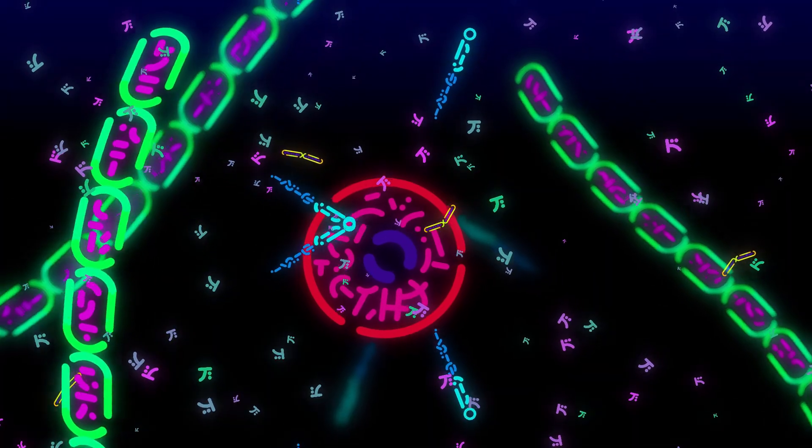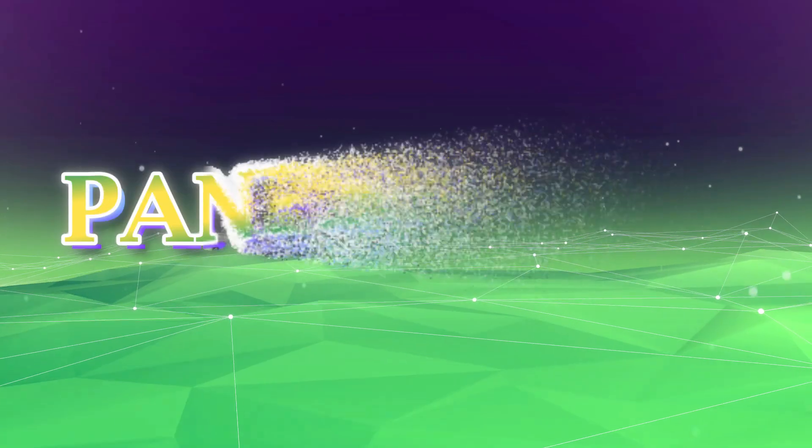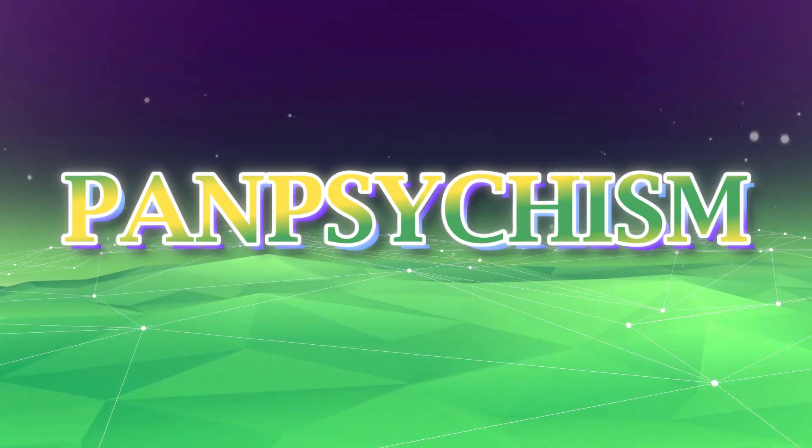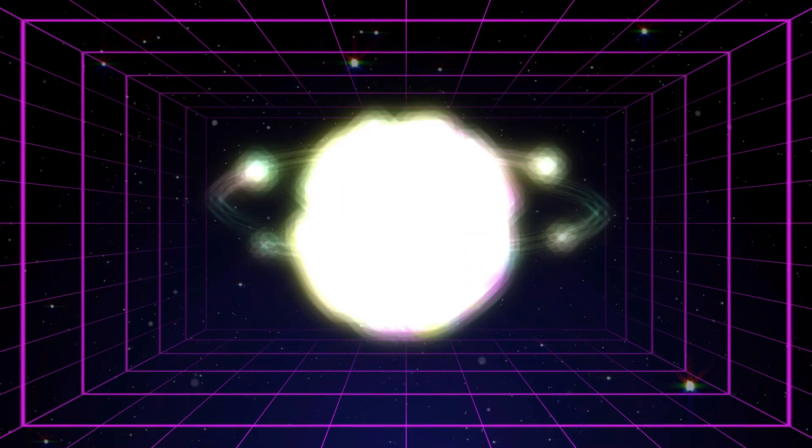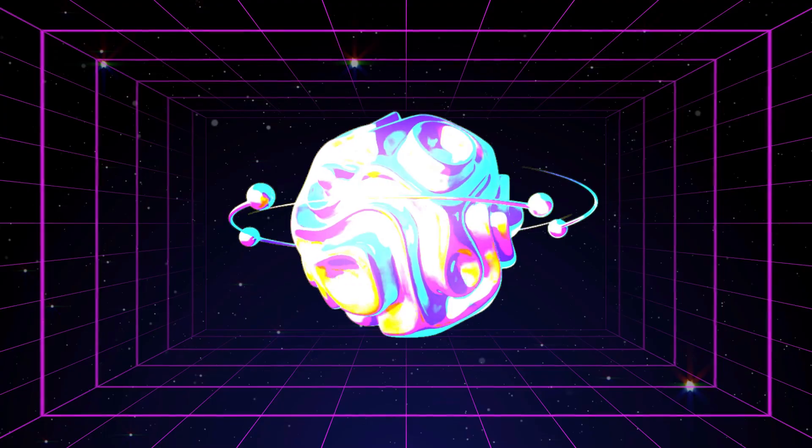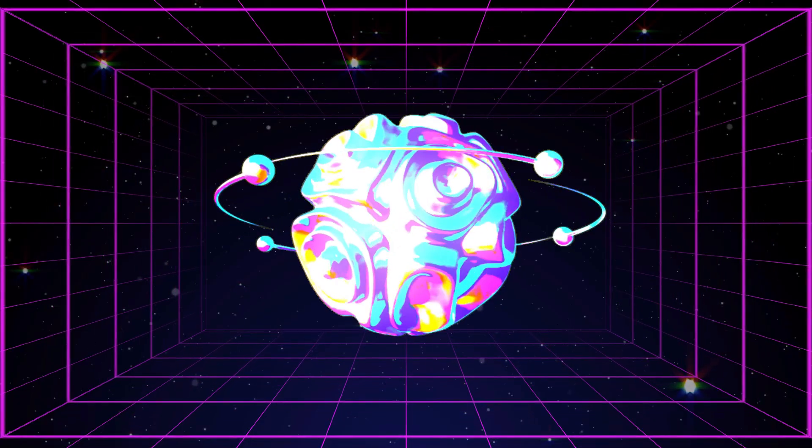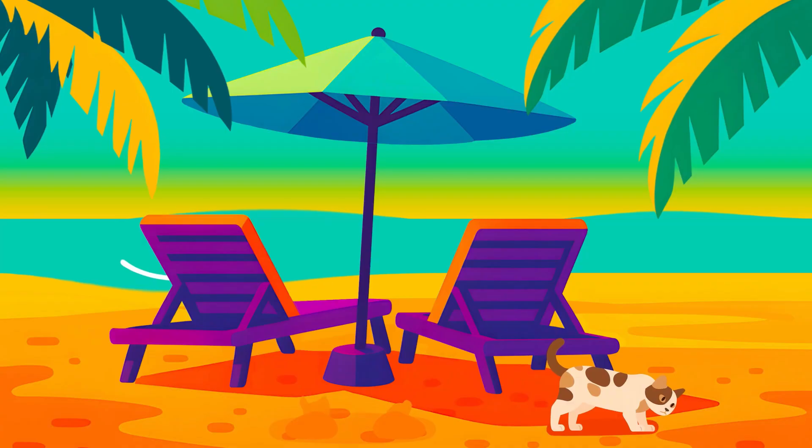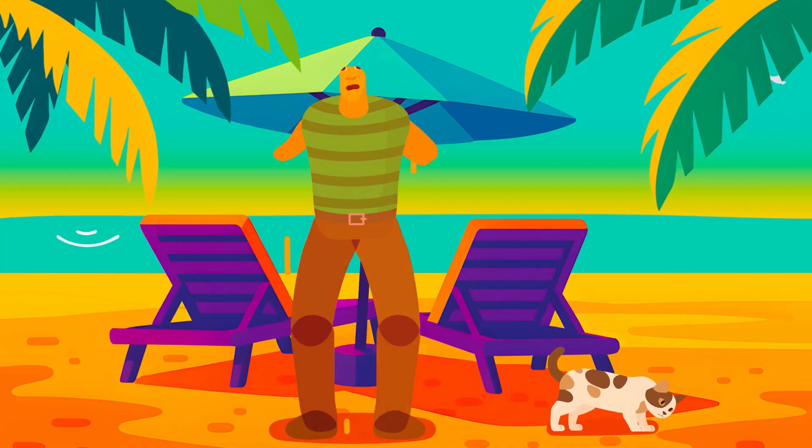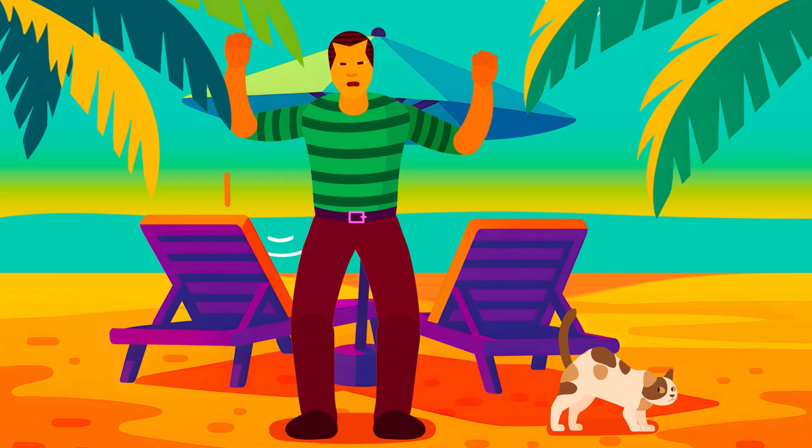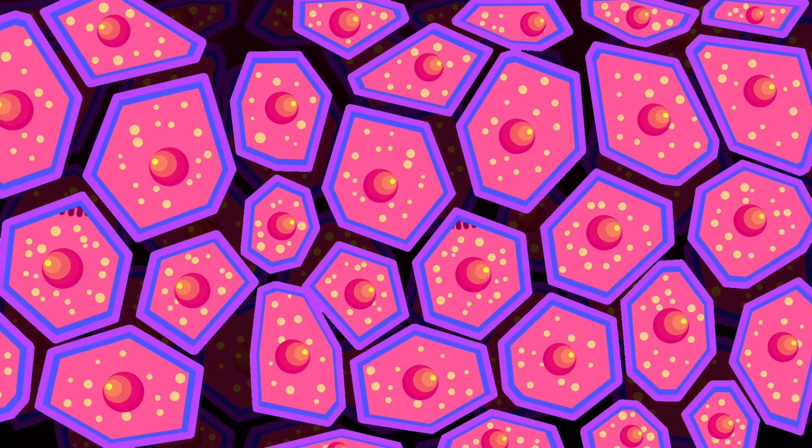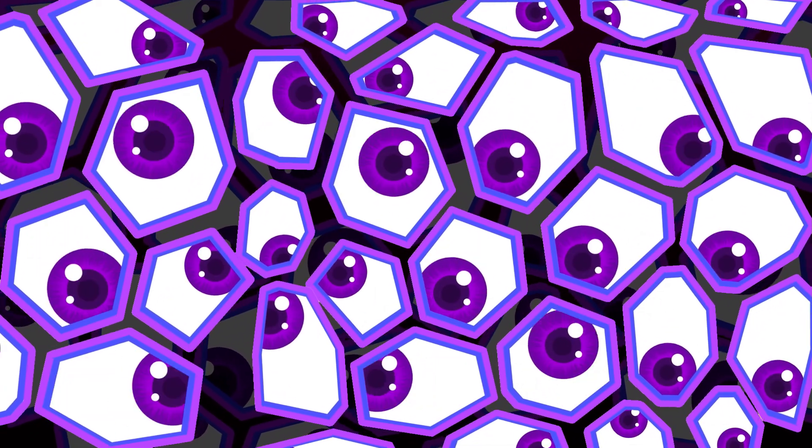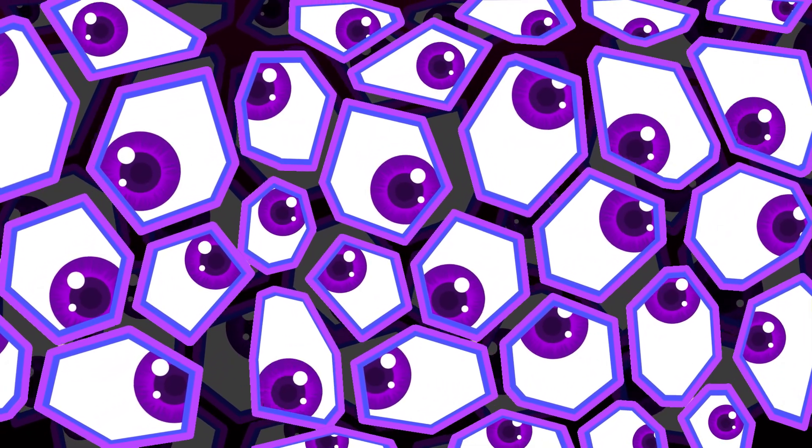This is where things get weirder. Some philosophers subscribe to a theory called panpsychism. It's the idea that consciousness isn't unique to humans or animals, but that it's a fundamental property of matter itself. Think of it like gravity or magnetism. In this view, everything, from a grain of sand to your pet cat, has some form of subjective experience. According to panpsychism, even a single-celled organism could be conscious. Not in the way we are, but in its own primitive sense.